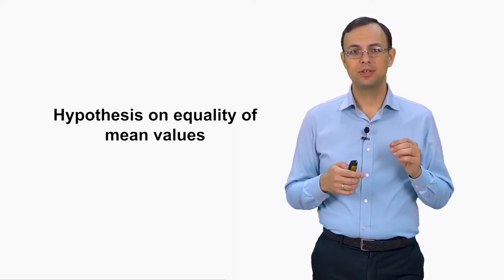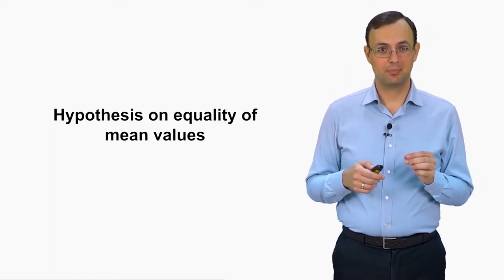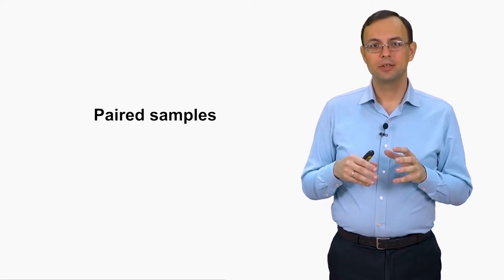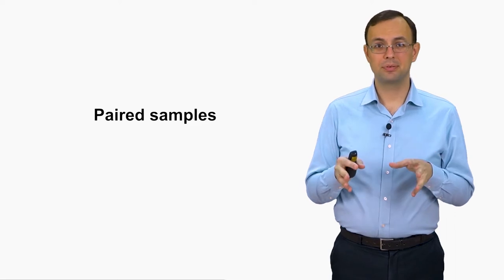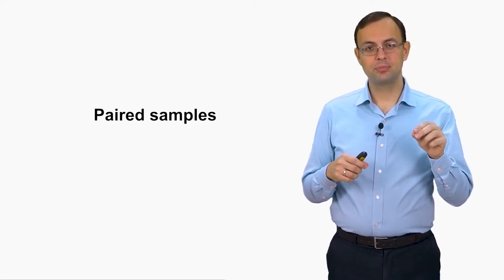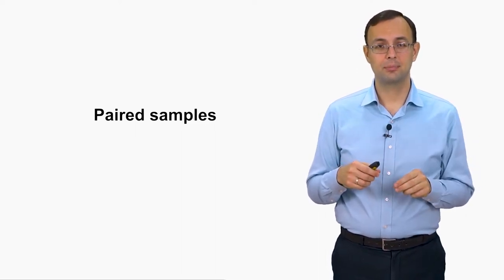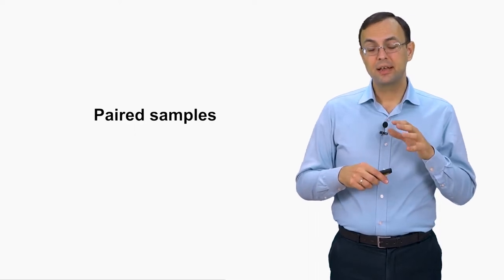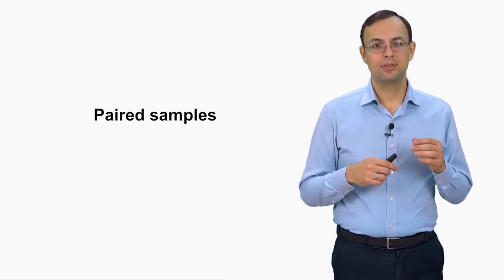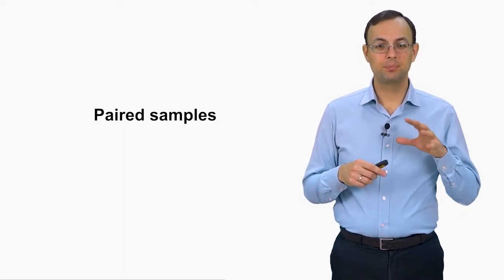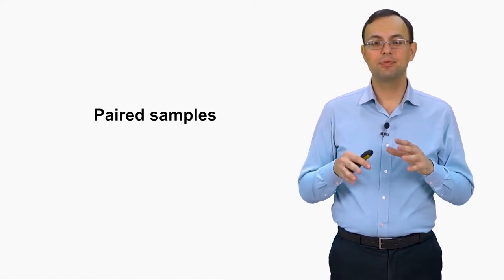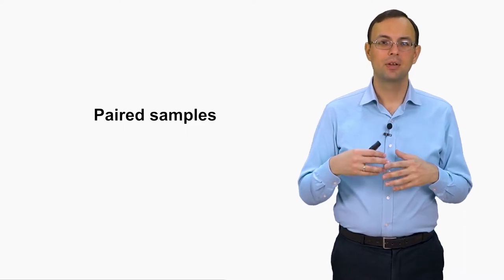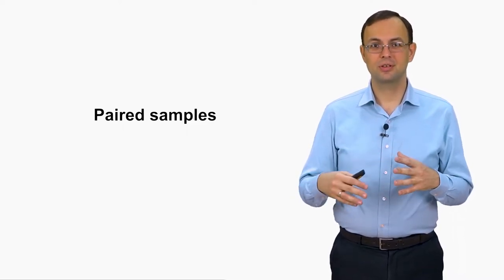The first case is the situation when we have two paired samples. Paired samples means that you choose a random sample of people and measure some numerical value for every person in your sample. Then you measure the same value for the same people but under some other condition. The most typical situation is that something is measured before and after — like weights of people before and after a course of physical training, or grades of students before and after attending some additional classes.